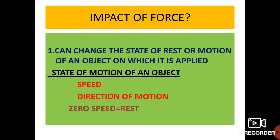Impact or effect of force. The first one is: force can change the state of motion of an object on which it is applied. The state of motion of an object refers to its speed or direction of motion. If an object's speed is zero, that means the object is at rest.